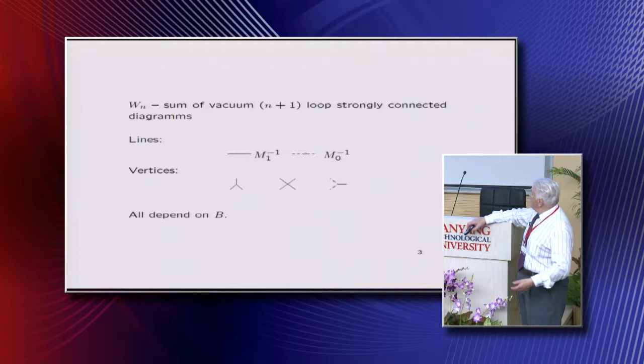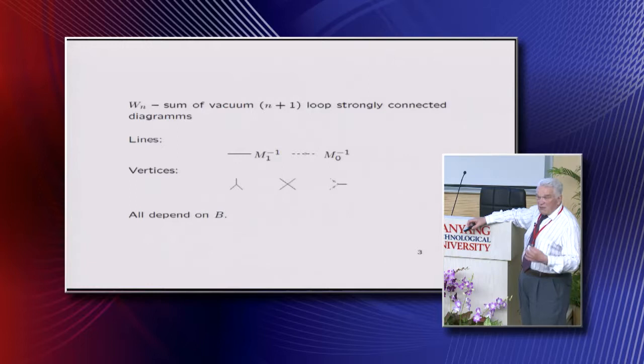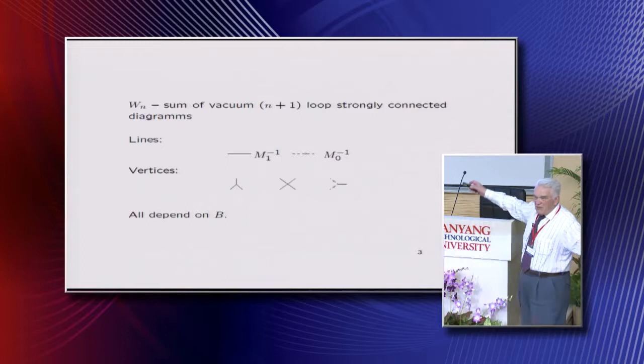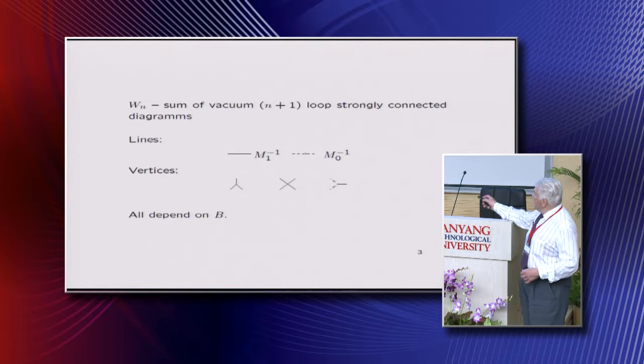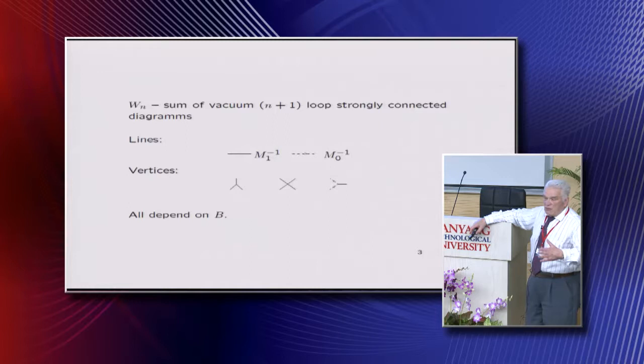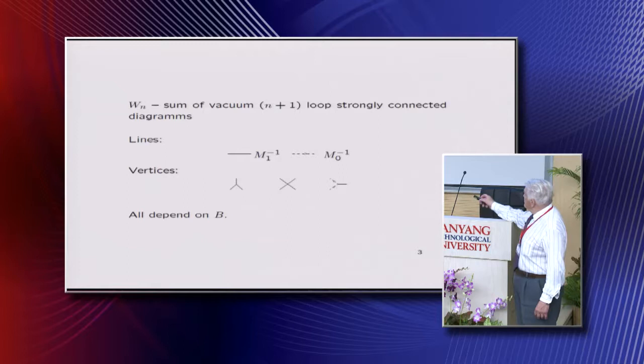About the diagram technique: when you develop in the vicinity of some B, then you have to calculate only vacuum diagrams because all the physical content is in variable B. You'll get legs when you will differentiate by B and so on. And there are lines for vector particles, for fictitious particles and vertices of Yang-Mills and vertex of fictitious particle type Yang-Mills. These things all depend on B, and you have to calculate these vacuum diagrams.